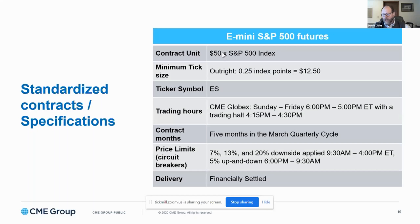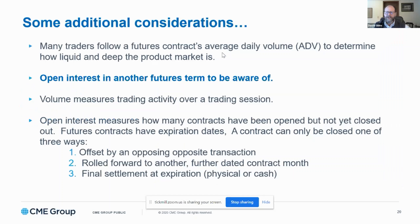Every contract has its own contract definitions and specifications, listed on CME's website. Before you trade a product, you should know what those specifications are because they outline the terms of the contract you'd be agreeing to by entering into a futures transaction. You can see some of them listed in the table for e-mini S&Ps. Average daily trading volume is the number of transactions that take place — whenever a buyer and a seller meet and create a trade, that's considered volume.